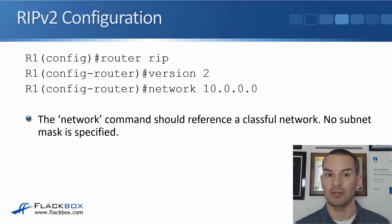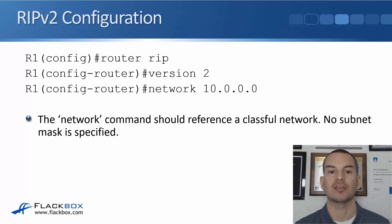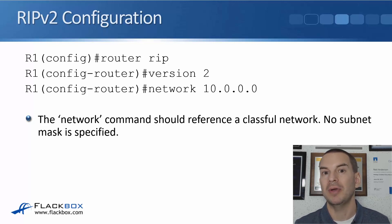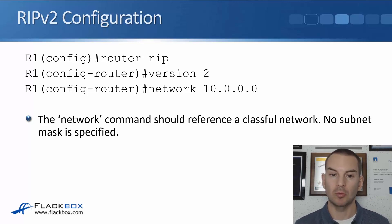To configure RIP, at global config we say 'router rip', and then optionally 'version 2' — we do want to be running the latest version. To specify the interfaces you want RIP running on and to be advertised, we use the network command. In this example, we say 'network 10.0.0.0', so all interfaces beginning with 10 will start sending out RIP hello messages and trying to form an adjacency.